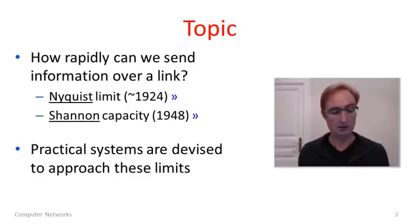In this segment I'm going to talk about two different results: the Nyquist limit and the Shannon capacity. As you can see, these are fairly early results, they've been known for a long time. They give us limits on what it's possible to achieve. So the real systems which are built are going to operate within these limits.